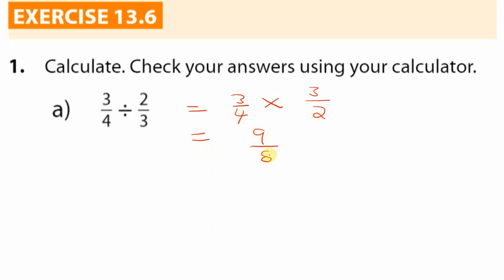Tops: three times three is nine. Bottoms: four times two is eight. This is an improper fraction — the numerator is larger than the denominator. So we ask: how many times can eight go into nine? Once. The remainder is one, which goes at the top, and we always keep the bottom the same. So this is now a mixed fraction: one and one-eighth.